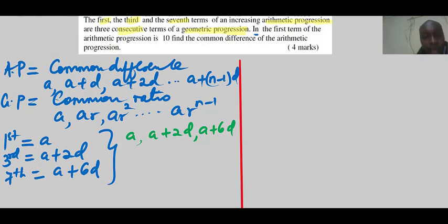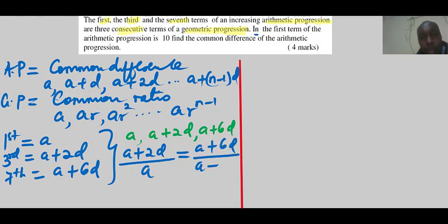Since these are consecutive terms of a GP, the ratio must be constant. So (a+2d) divided by a should equal (a+6d) divided by (a+2d). We are given that the first term of the arithmetic progression is 10, so a equals 10. We need to find the common difference d.